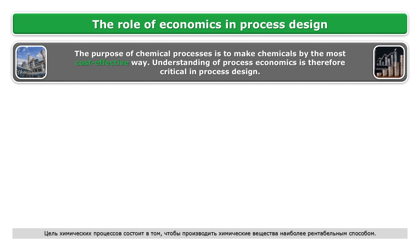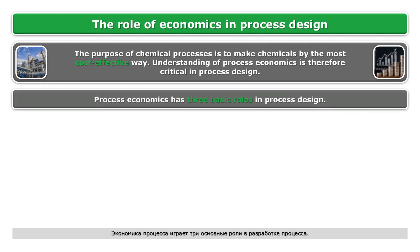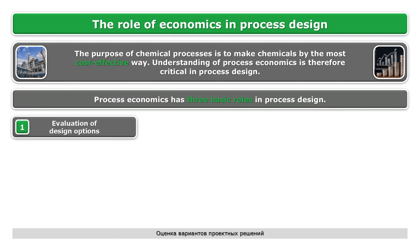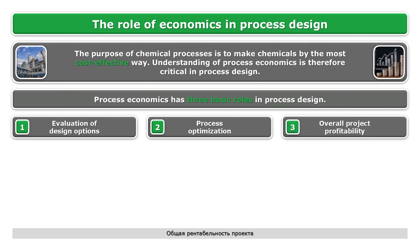The purpose of chemical processes is to make chemicals in the most cost-effective way. Understanding process economics is therefore critical in process design. Process economics has three basic roles in process design: evaluation of design options, process optimization, and overall project profitability.